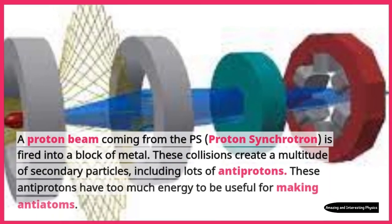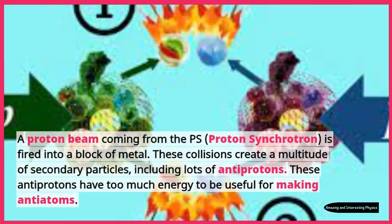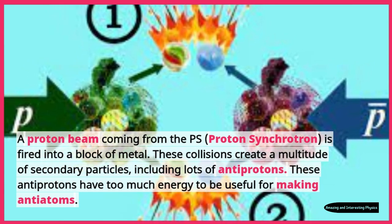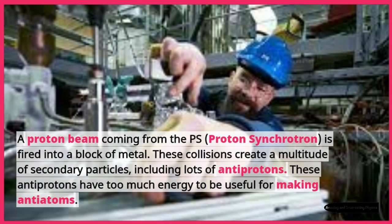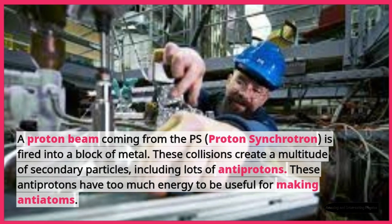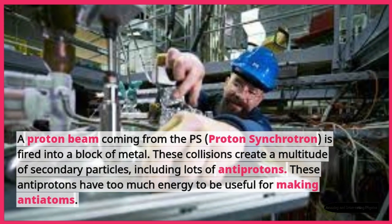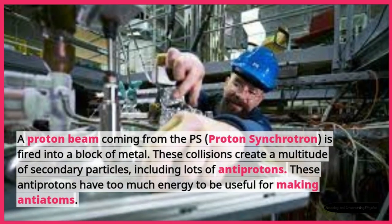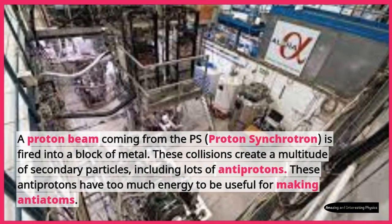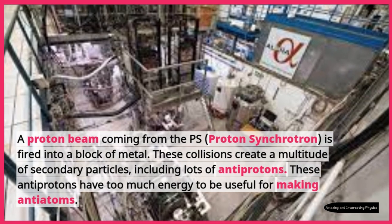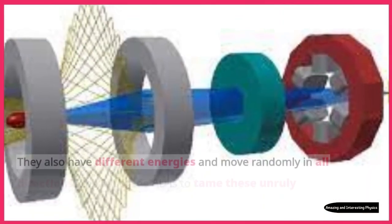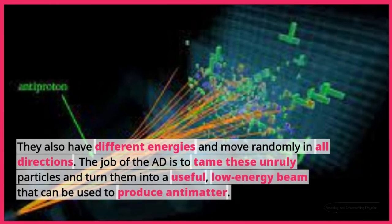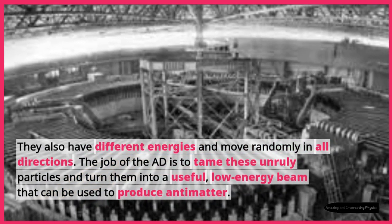A proton beam coming from the PS, proton synchrotron, is fired into a block of metal. These collisions create a multitude of secondary particles, including lots of antiprotons. These antiprotons have too much energy to be useful for making anti-atoms.